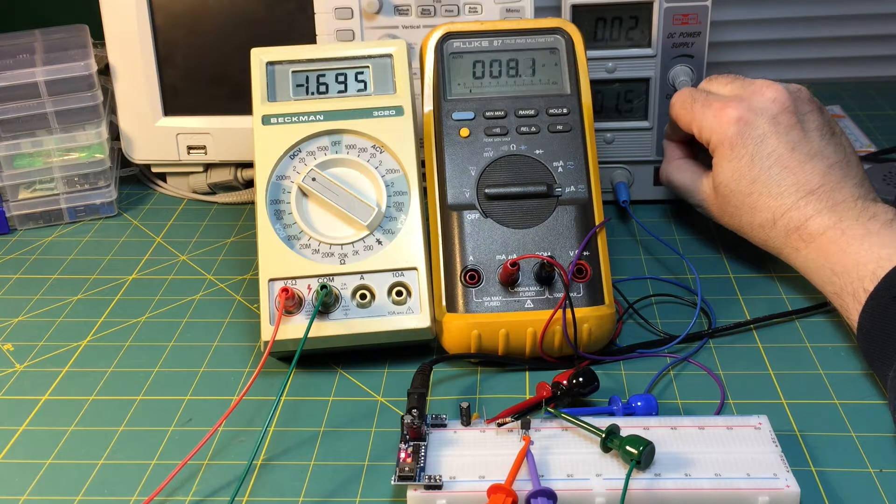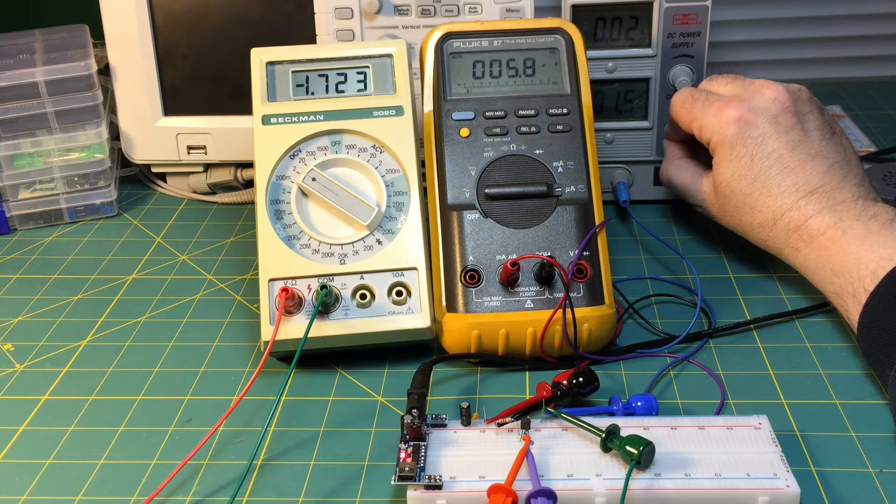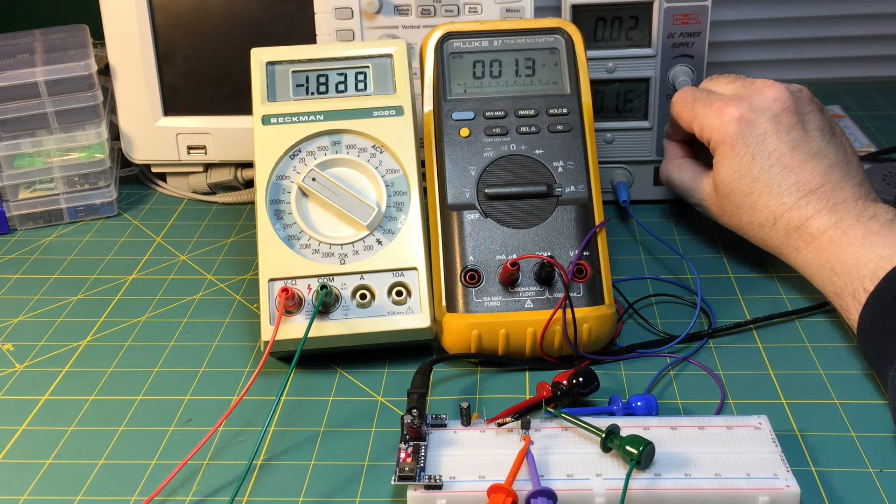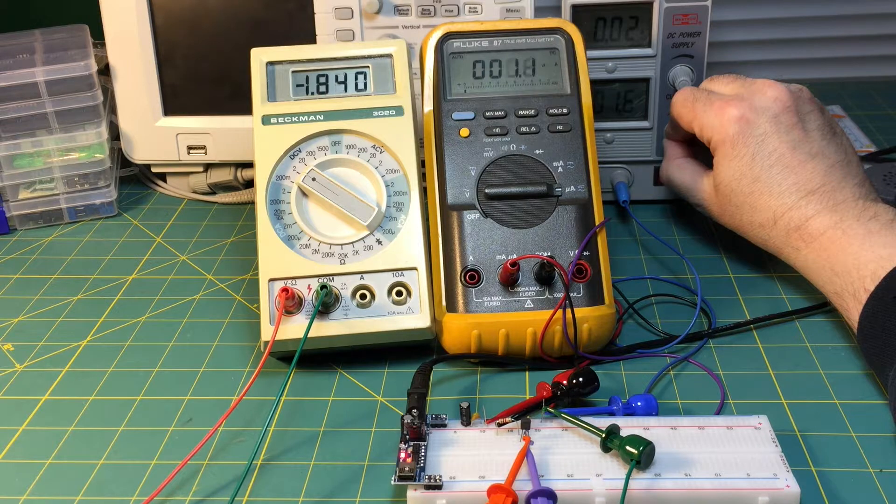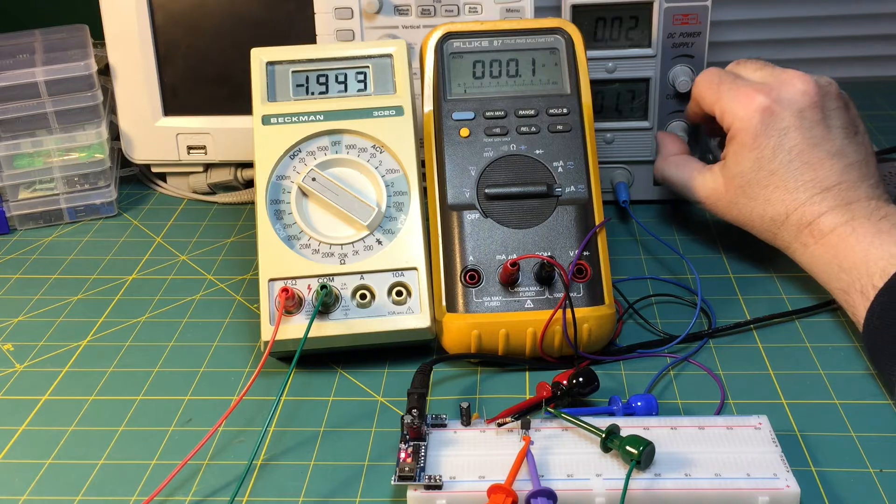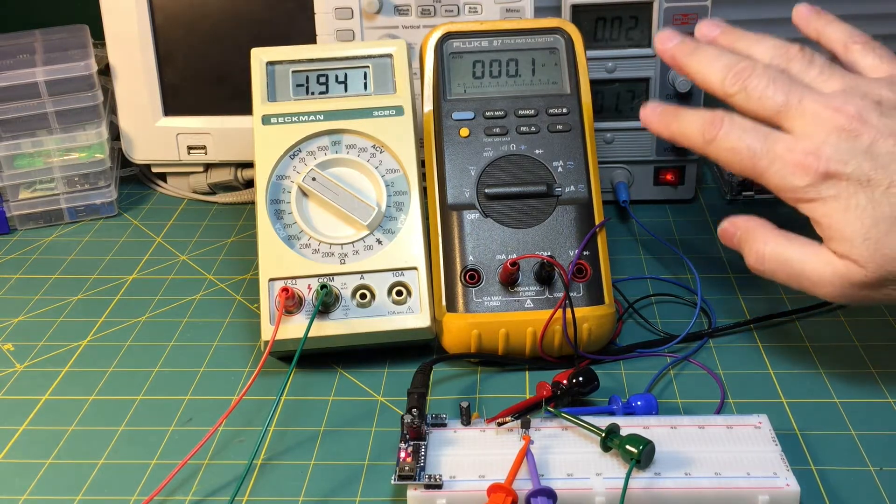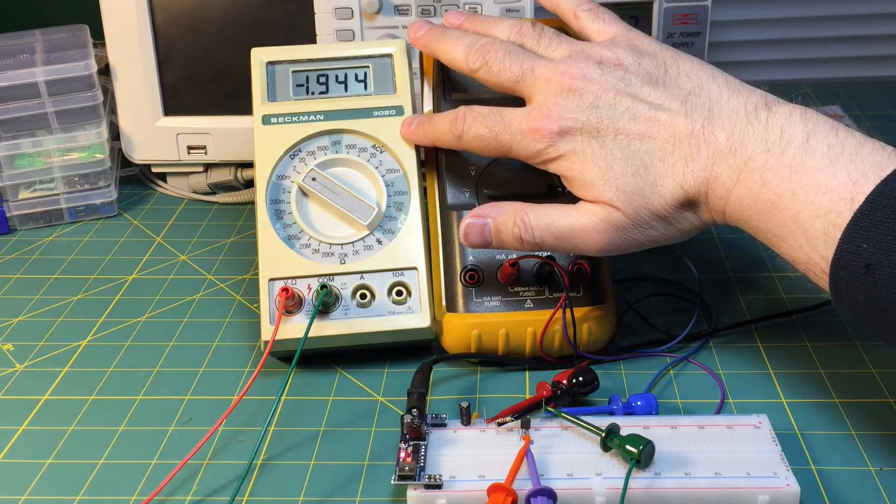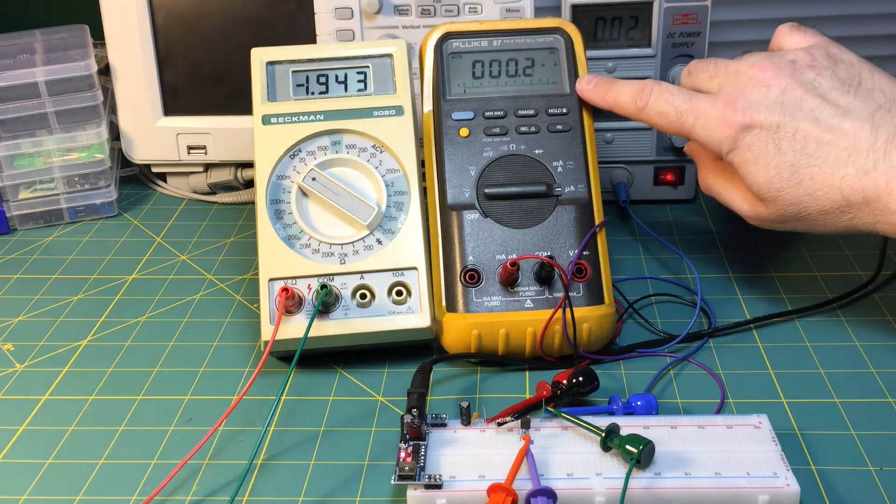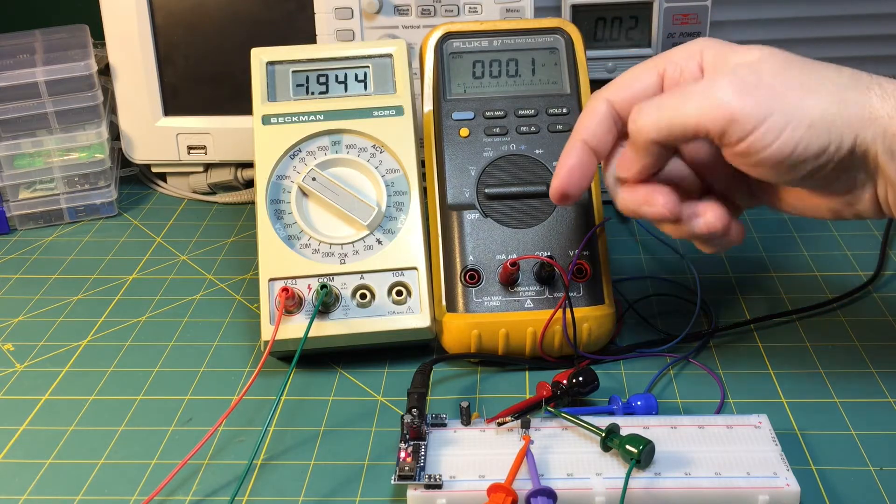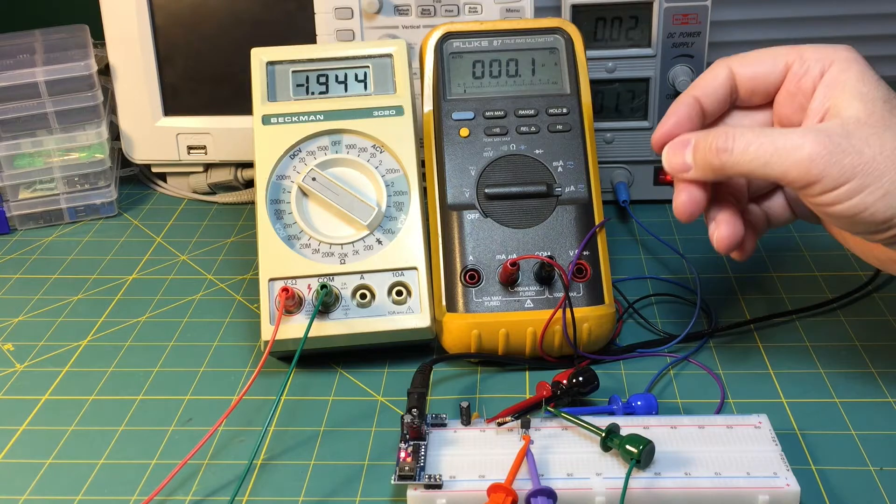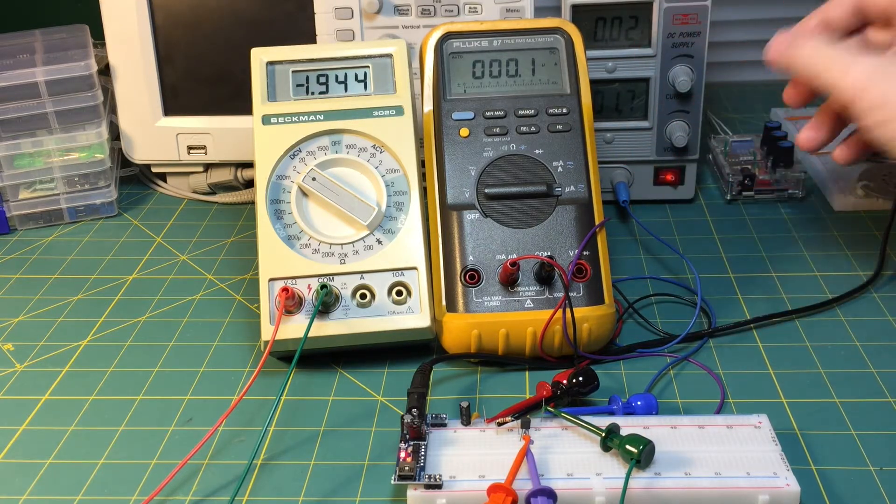Almost there. And we'll call that zero. So right now with the gate voltage at minus 1.94, the drain current is essentially zero. So the channel is completely depleted of charge carriers at this point, essentially an open circuit.